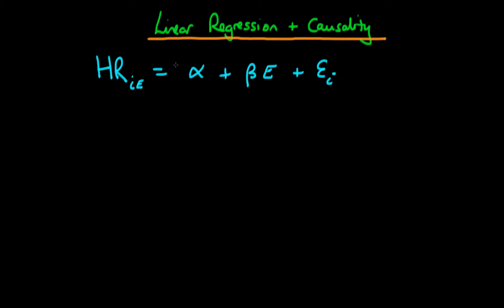Just to reiterate: we're talking about an individual's potential level of resting heart rate, which in most cases is not actually observed. We only observe the level of heart rate which an individual actually obtains for exercising an amount E_I. Also note that this relationship has E in it, not E_I, because it represents the causal relationship between any given exercise level and any potential heart rate which that individual would achieve.